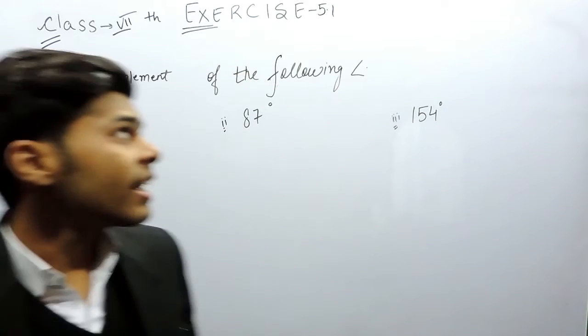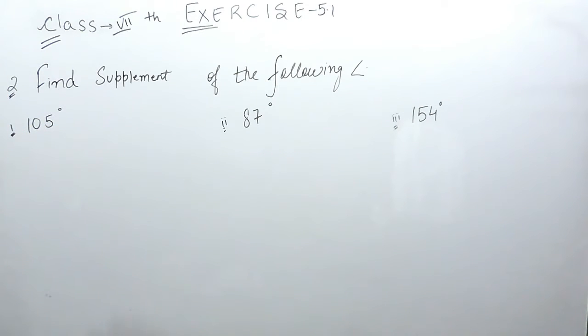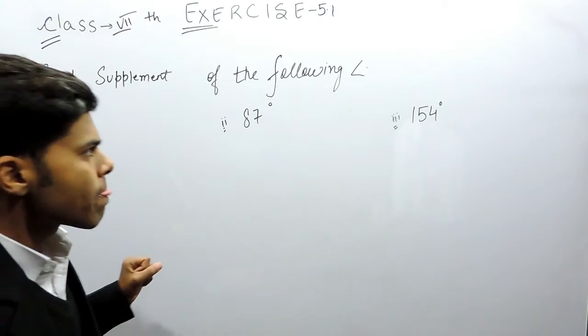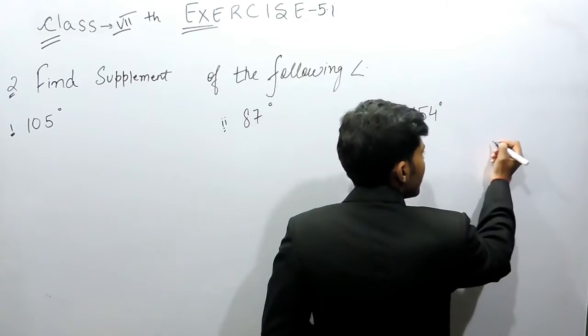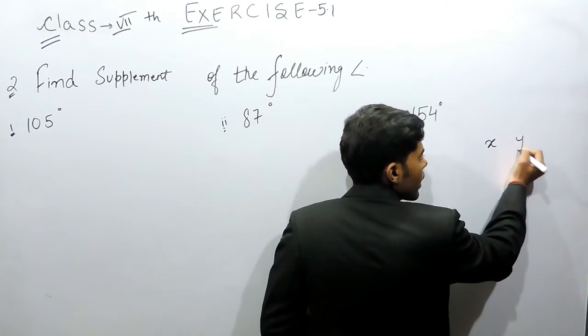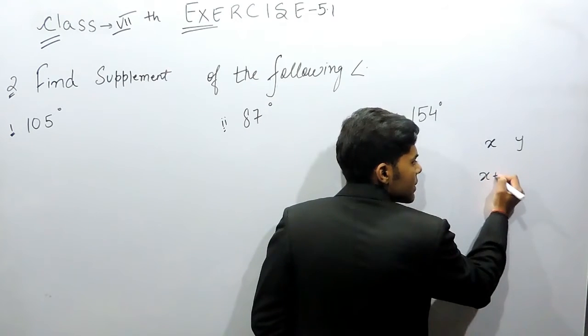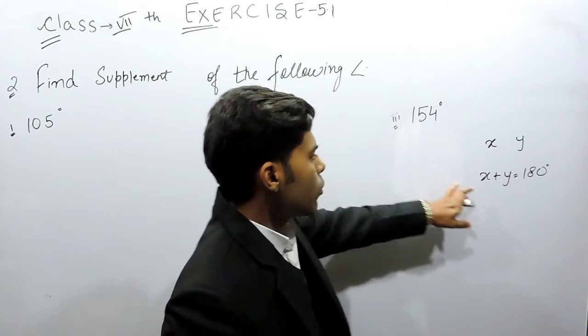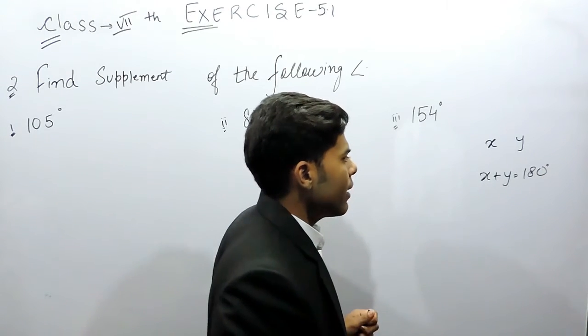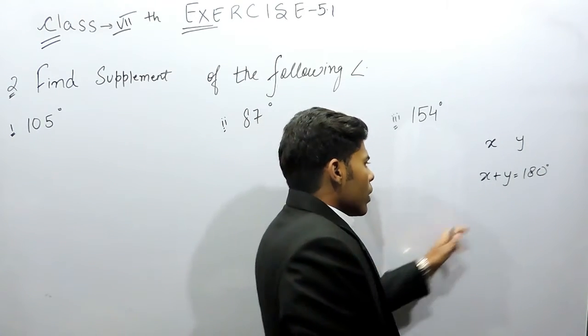Hello everyone, this is the second question of exercise 5.1. In this question we have to find the supplement of these angles. So basically, what is supplement or supplementary angle? If we are given two angles x and y, and their sum is equals to 180 degrees, then these two pair of angles are called supplementary angles.